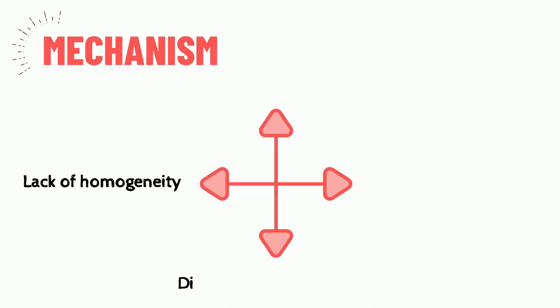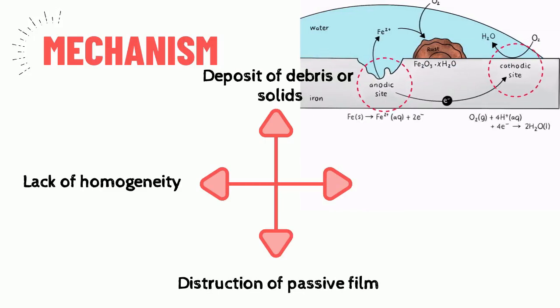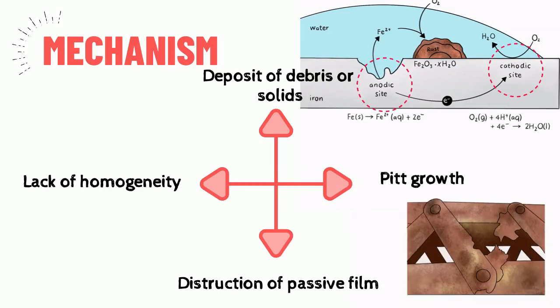Next, the destruction of a passive film due to increase in corrosion potential. Deposit of debris or solids on the metal surface generally leads to the formation of anodic and cathodic sites. Lastly, the pit growth where formation of an active passive cell with a large potential difference.